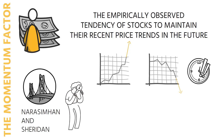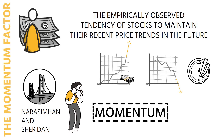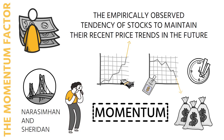University of California Los Angeles scholars Jegadeesh and Titman were the first to identify the momentum factor in 1993, when they demonstrated that buying stocks that have done well recently and shorting stocks that have done poorly delivered a significant premium over a 3 to 12 month horizon.